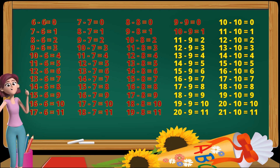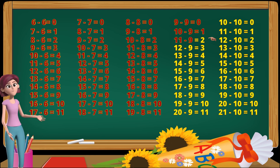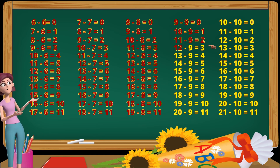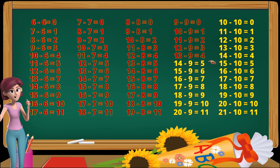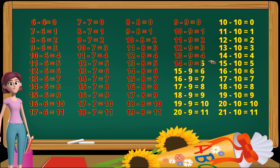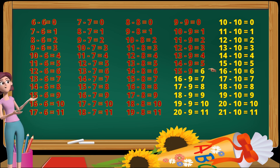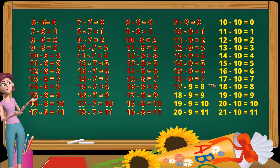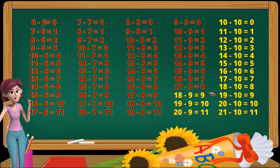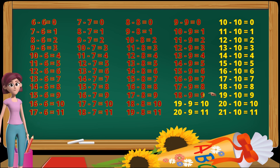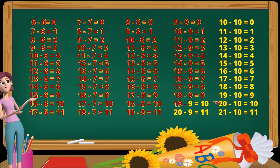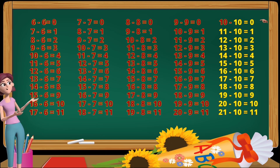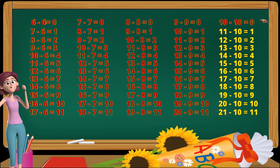10 minus 9 equals 1. 11 minus 9 equals 2. 12 minus 9 equals 3. 13 minus 9 equals 4. 14 minus 9 equals 5. 15 minus 9 equals 6. 16 minus 9 equals 7. 17 minus 9 equals 8. 18 minus 9 equals 9. 19 minus 9 equals 10. 20 minus 9 equals 11. 10 minus 10 equals 0.